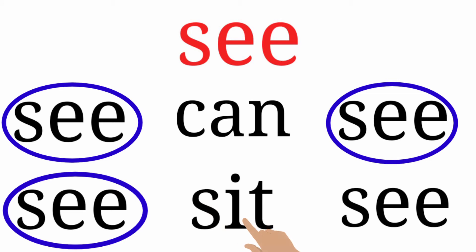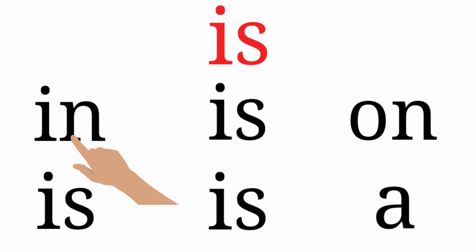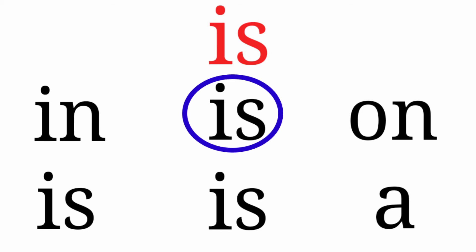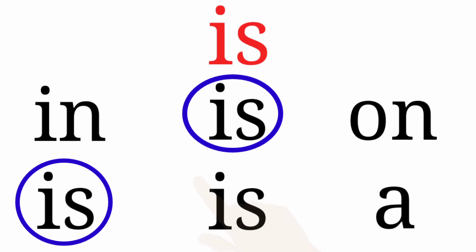Next, S-I-T — 'sit' — which is different. And the last word is C-S-E-E — this is also the same word, so we are going to circle it. Next, I-S — 'is' — we are going to circle 'is'. I-N — 'in' — which is different. I-S — 'is' — which is the same word, so we are going to circle it. Next, O-N — 'on' — which is different. Next, I-S — 'is' — same word, so we are going to circle it. The next one also same — I-S — we are going to circle it.